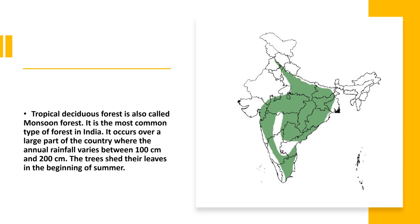Next we come to the tropical deciduous forests, which are also known as the monsoon forest. It is the most commonly found forest in India. This type of forest is found in large areas of Uttar Pradesh, Bihar, Jharkhand, parts of Madhya Pradesh, Chhattisgarh, Orissa, Telangana, Maharashtra, Tamil Nadu, and they can also be seen along the foothills of the Himalayas.